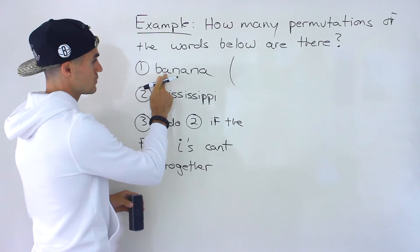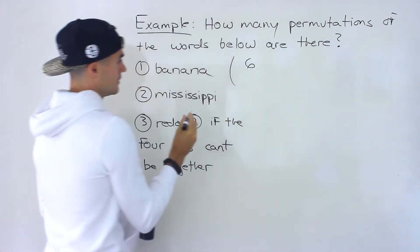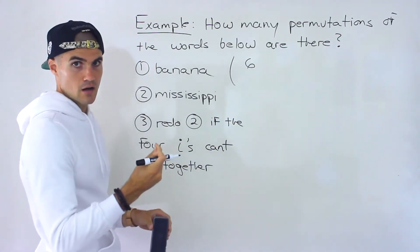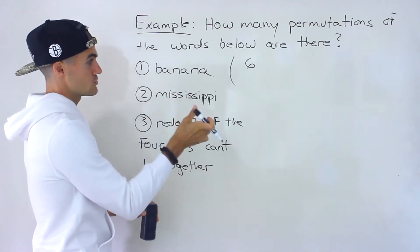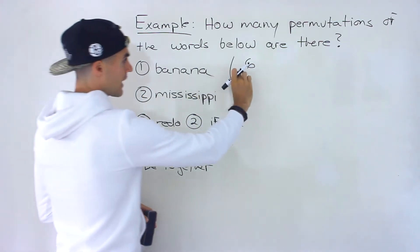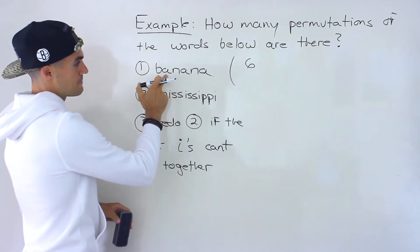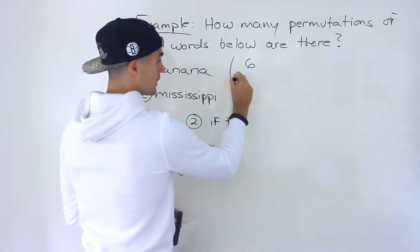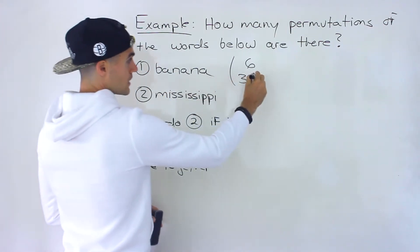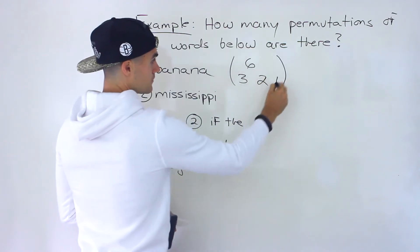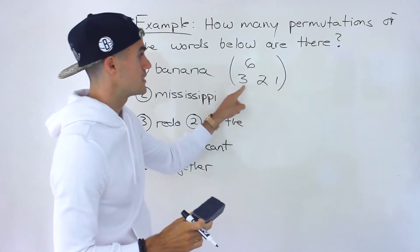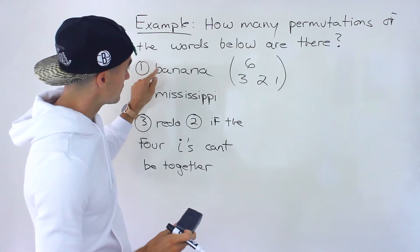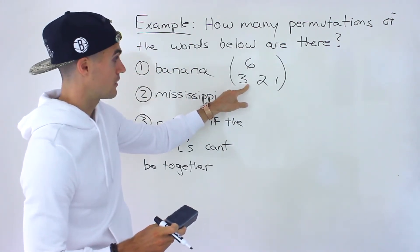Notice in banana we have six letters. The bottom portion is going to be the frequency of each letter — the number of times each letter is used in the word. Starting with the largest frequency: the A's appear three times, the N's appear twice, and the B appears once. Remember that the sum of these should equal the top, because we have to account for the frequency of each letter in the bottom row.